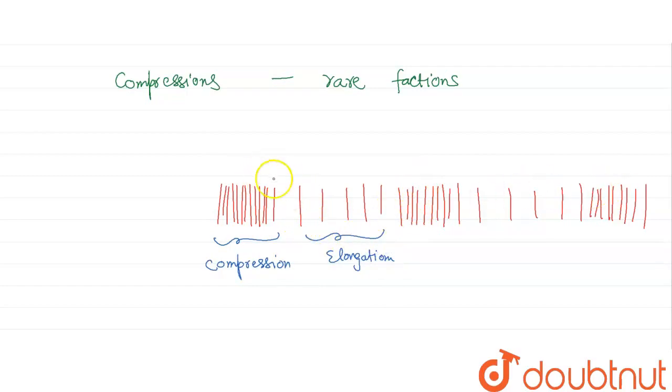So basically, this medium is compressed, and then it extends, and then it again compresses, extends, compresses, and then it goes back in rarefactions.